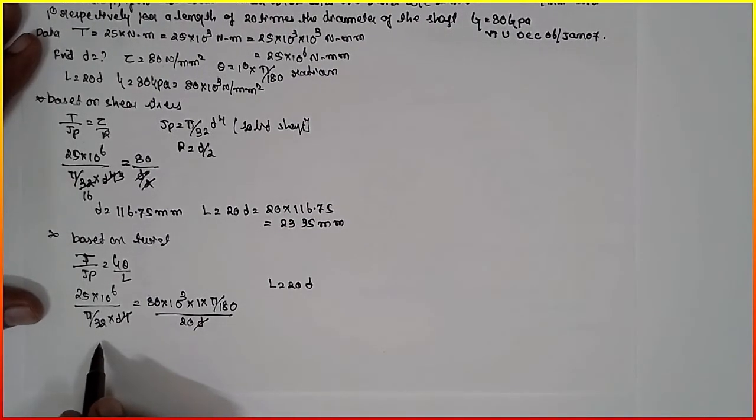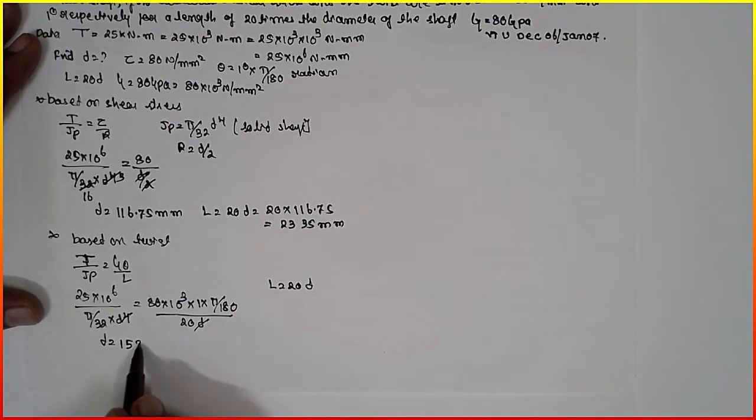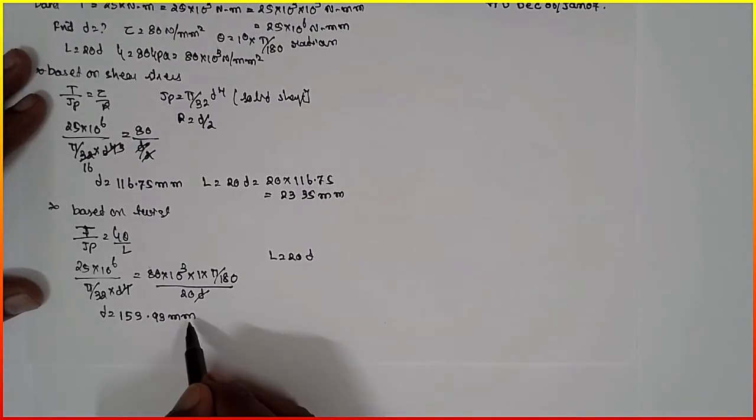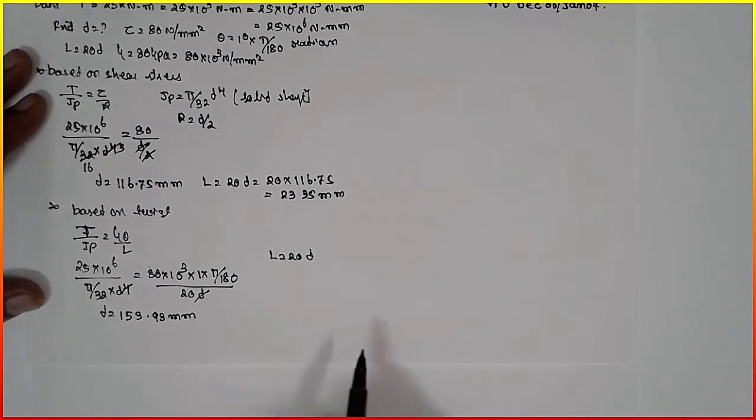You will get diameter as D equals 153.93 mm. And length will be, just multiply length here with respect to 20, you will get the length.